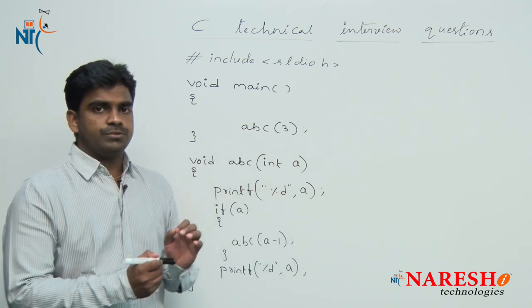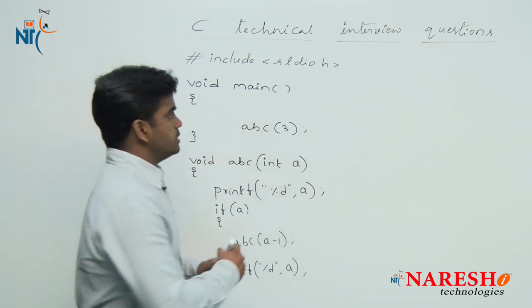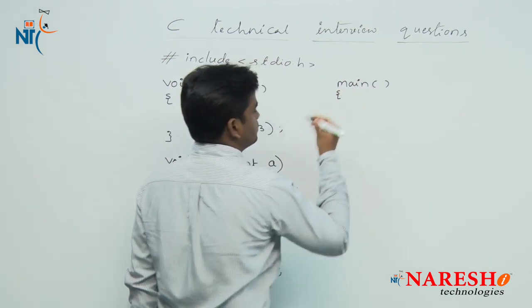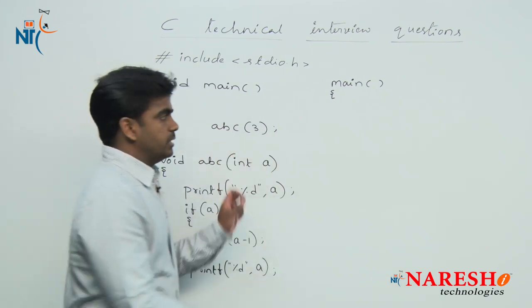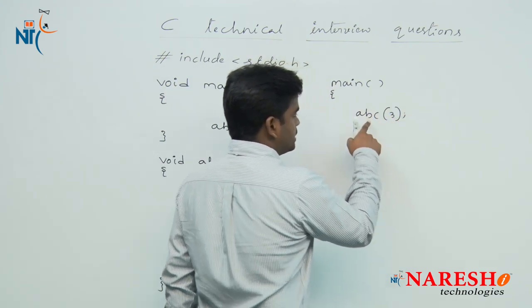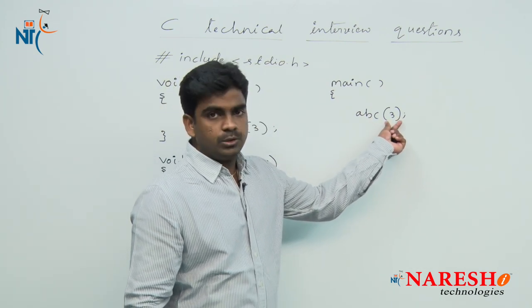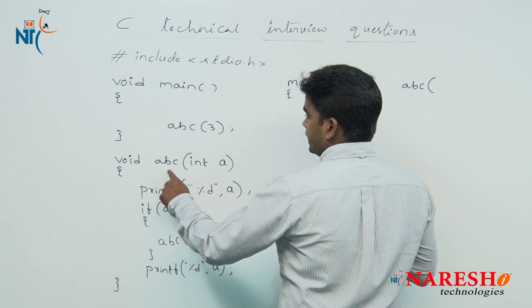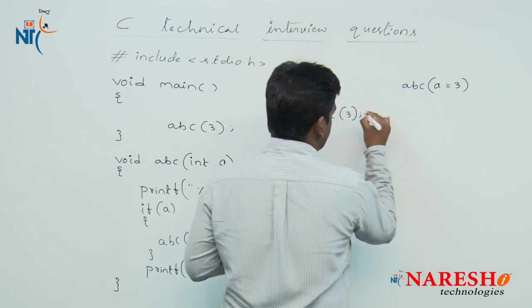With the help of this example you will understand how a recursive function executes, and we can also see the output of this program. C program execution starts from the main function, so first memory will be allocated to main in the stack area. Inside main we are calling abc(3), so next memory will be allocated to the function abc. We are passing the value 3, so abc gets memory allocation and collects the value into variable a, so a equals 3.